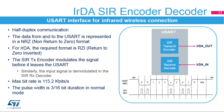The USART supports IrDA specifications, which is a half-duplex communication protocol. The data from and to the USART is represented in an NRZ format, where the signal value is at the same level through the entire bit period. For IrDA, the required format is RZI, where a one is signalled by holding the line low, and a zero is signalled by a short high pulse. The SIR transmit encoder modulates the NRZ transmit bitstream output from the USART. The SIR receive decoder demodulates the return-to-zero bitstream from the infrared detector and outputs the received NRZ serial bitstream to the USART.